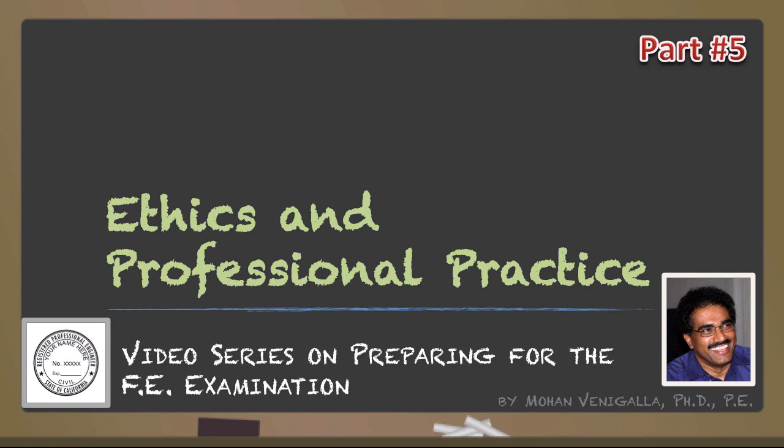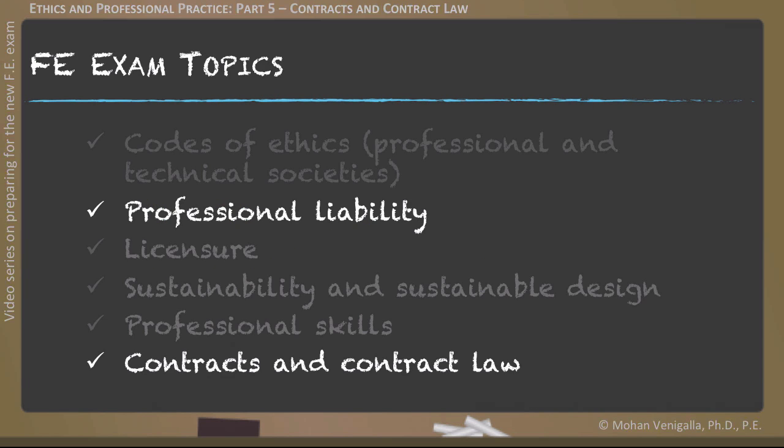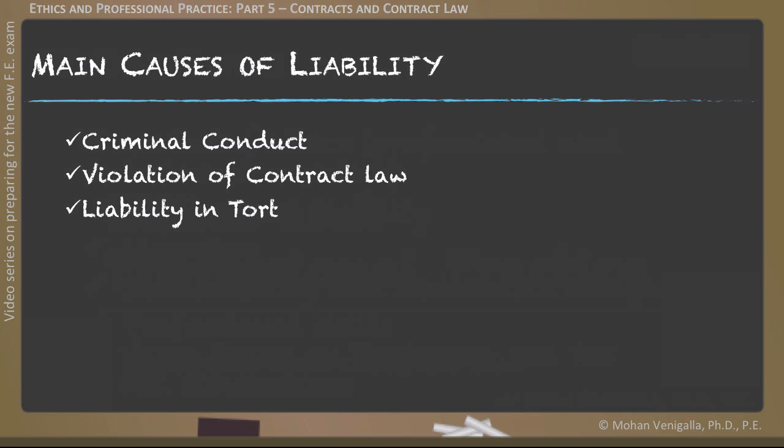Welcome to Part 5 of the video series on Ethics and Professional Practice. Earlier we mentioned that the FE civil exam contains a couple of legal topics: professional liability, and contracts and contract law. For any practicing professional, the main causes of liability are going to be from criminal conduct, violation of contract law, and liability in tort. The focus of this presentation is going to be on contract law.